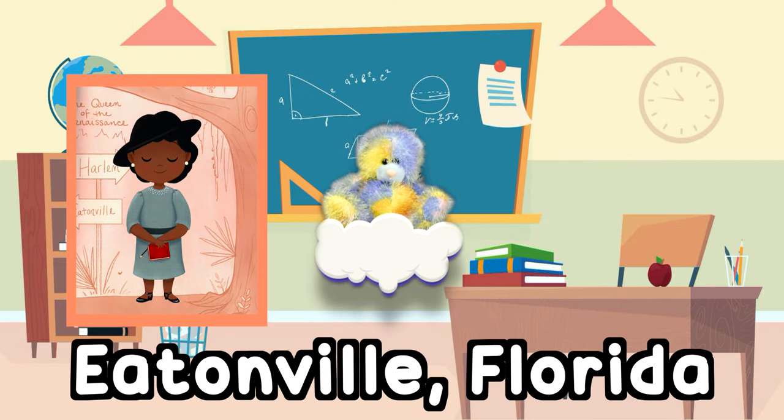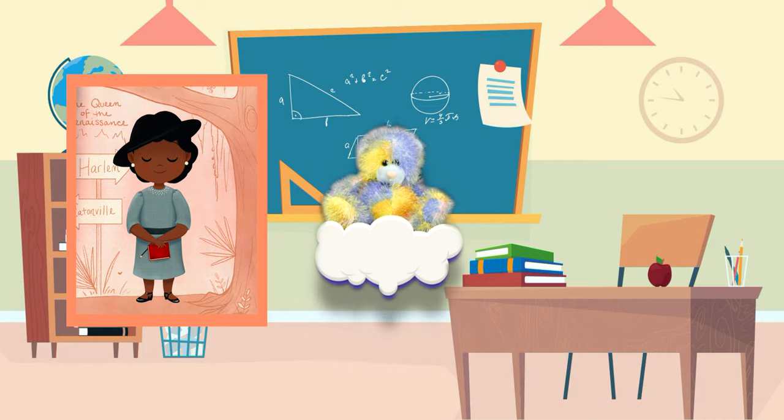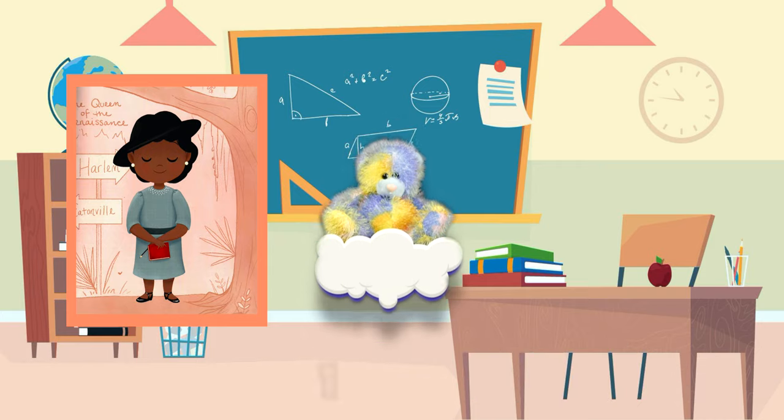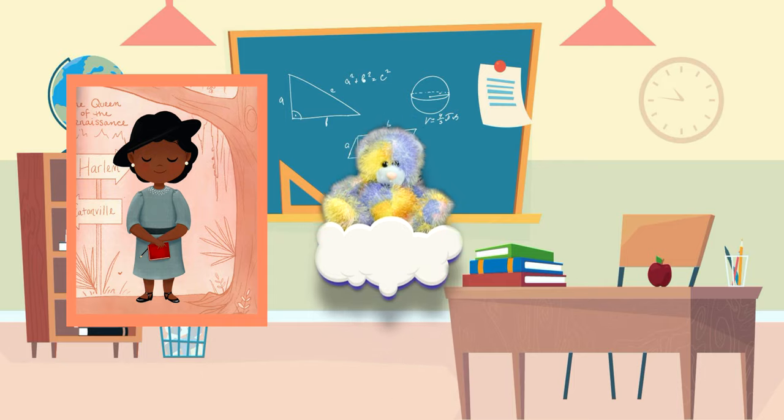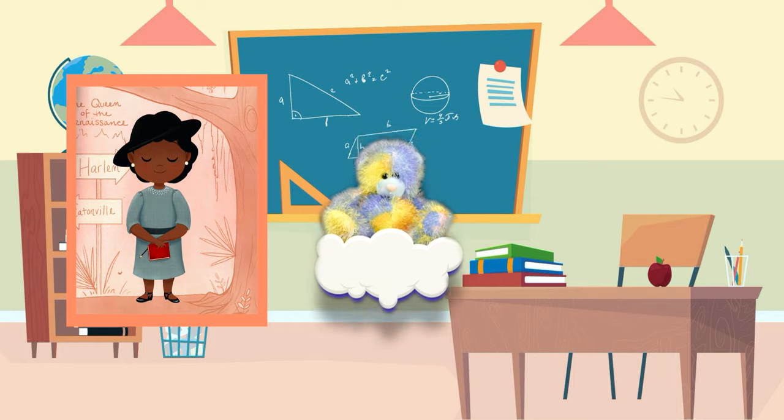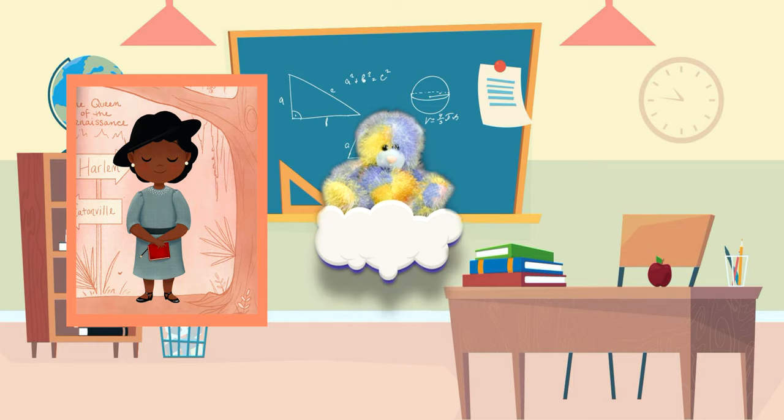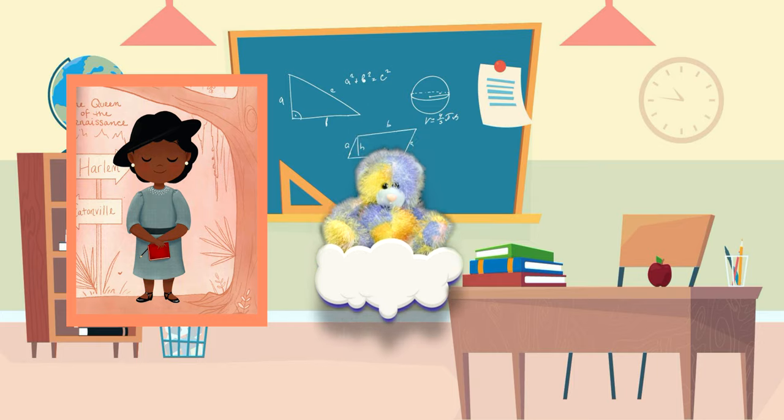Eatonville was iconic because in 1886, it became the first self-governed all-black city in America. There was always an extreme sense of pride in its culture and traditions.